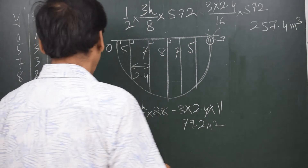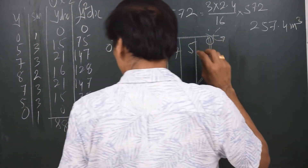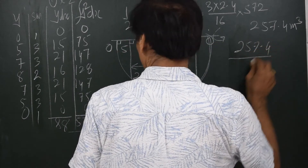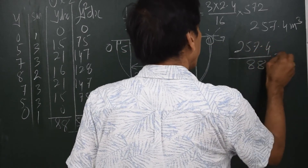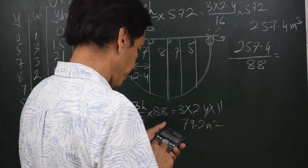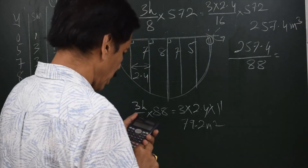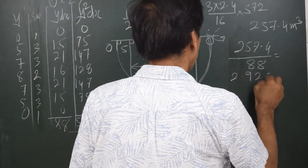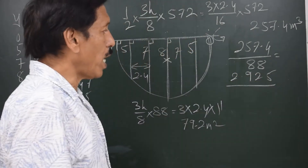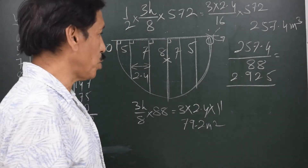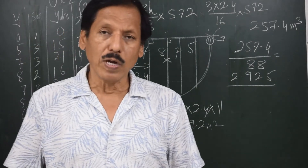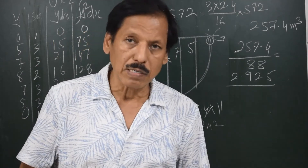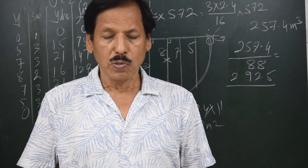The depth of the geometric centroid with respect to the water level is the moment of area divided by the area — that is 257.4 divided by 79.2 — wait, divided by the area corresponding to sum 88. That gives me 2.925, nearly 3 meters. So 2.925 meters is the position of the geometric centroid. This is how you find the position of the geometric centroid when the reference axis is perpendicular to the ordinates.